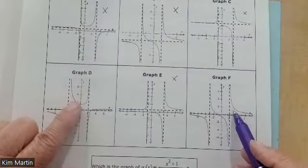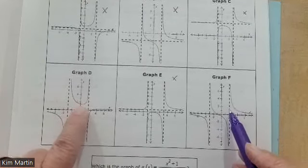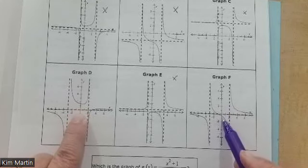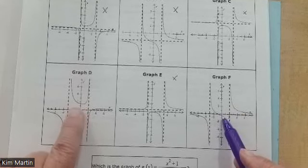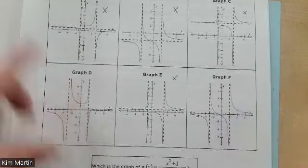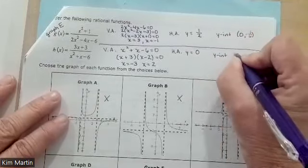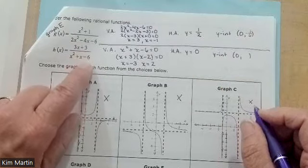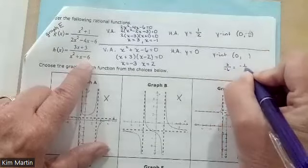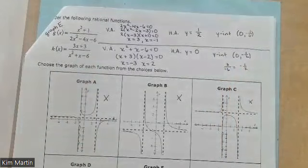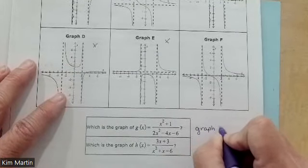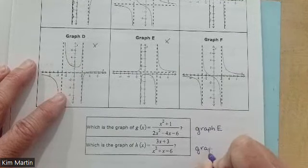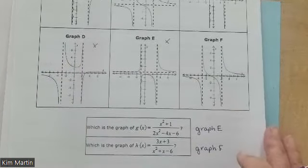Now it's between graph D and graph F. Looking at the y-intercepts, D looks negative and F looks positive. To find the y-intercept, plug in x equals 0: I get 3 over negative 6, which is negative one half. That's negative, so it rules out D. The answer has to be graph F. So the previous function was graph E and this one is graph F — found by process of elimination.